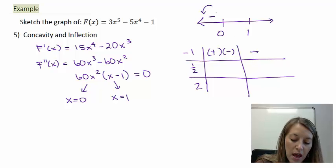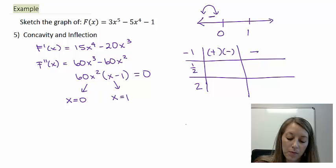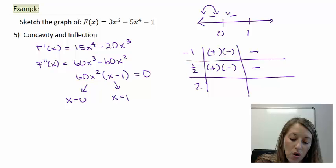If I plug one half into this, one half squared is positive times 60 is positive, one half minus one is negative, so this gives me a negative which says that it's also concave down between zero and one.